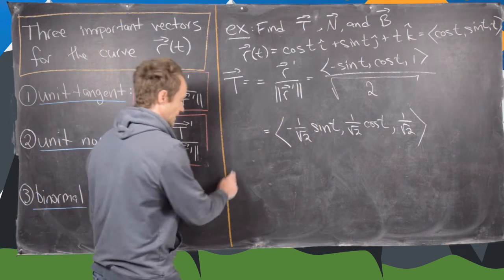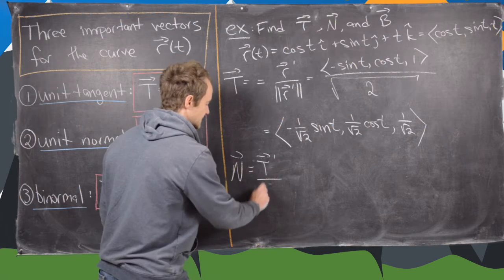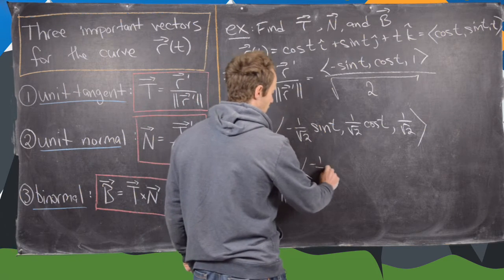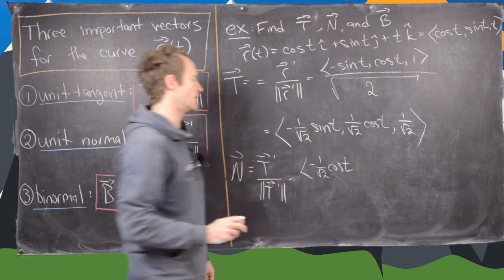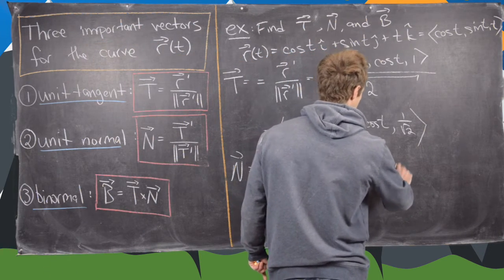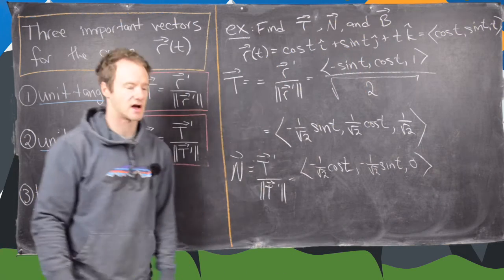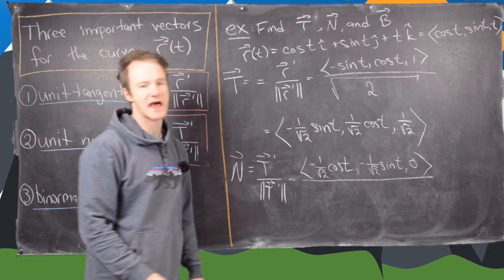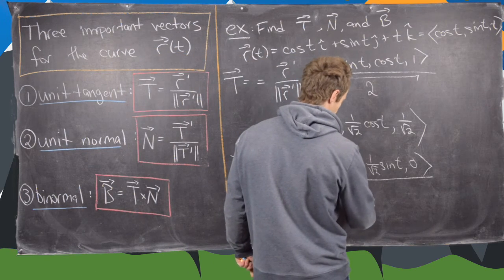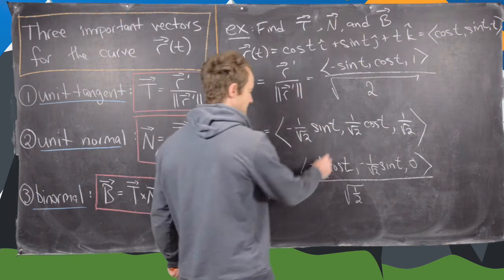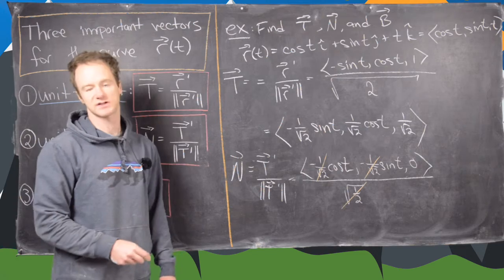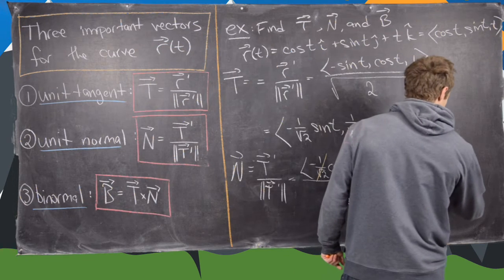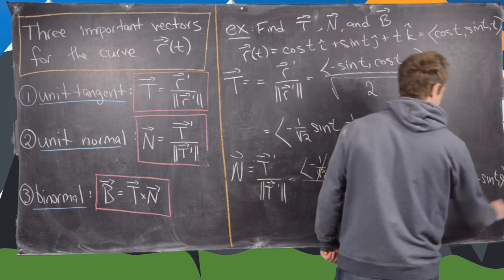Now let's find the unit normal vector N, which is the derivative of T divided by the magnitude of that derivative. The derivative of T is (−(1/√2) cos t, −(1/√2) sin t, 0). The magnitude works out to the square root of one half, and the 1/√2 factors cancel with the denominator, giving the normal vector N = (−cos t, −sin t, 0).